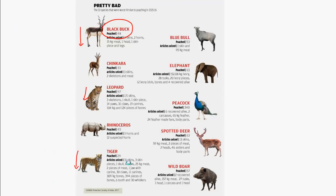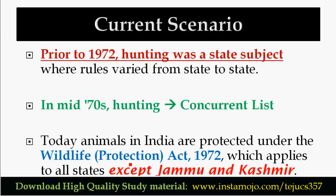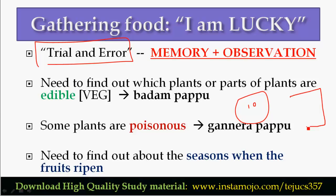The next important topic is gathering food. Food gathering is the second priority and is a trial and error method. For the earliest people, entering the forest, they had to learn what plants are edible and what parts of plants are usable — which is the edible part and which is the poisonous part. This is the trial and error approach.